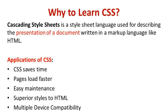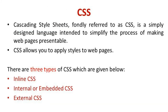CSS is a style sheet language used for describing the presentation of a document written in a markup language like HTML. It is used for designing and presenting documents in a beautiful way. CSS saves time, adds styling to web pages, and less code means the page loads faster. It is easy to maintain — simply change the style and all elements across web pages update automatically. CSS has a wider array of attributes than HTML and has multiple device compatibility.